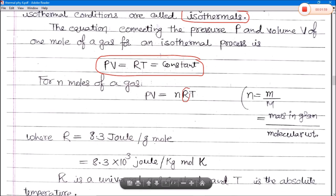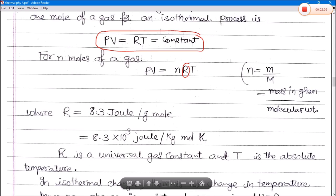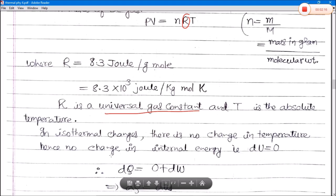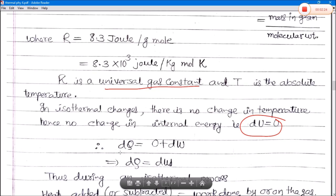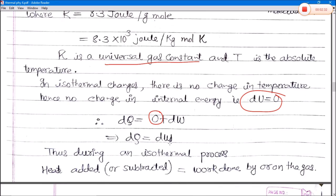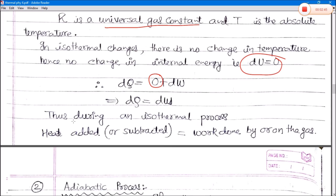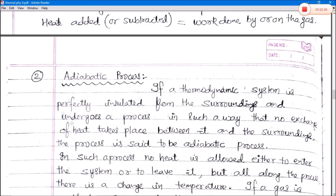The value of R is the universal gas constant whose value is 8.3 joules per gram per mole, or in other units 8.3 × 10³ joules per kg-mole per Kelvin. T is the absolute temperature. In isothermal change there is no change in temperature, hence no change in internal energy, so dU equals zero. Using the first law of thermodynamics: dQ equals dU plus dW. Since dU equals zero, dQ equals dW. Thus during the isothermal process, heat added or subtracted equals the work done by or on the gas.